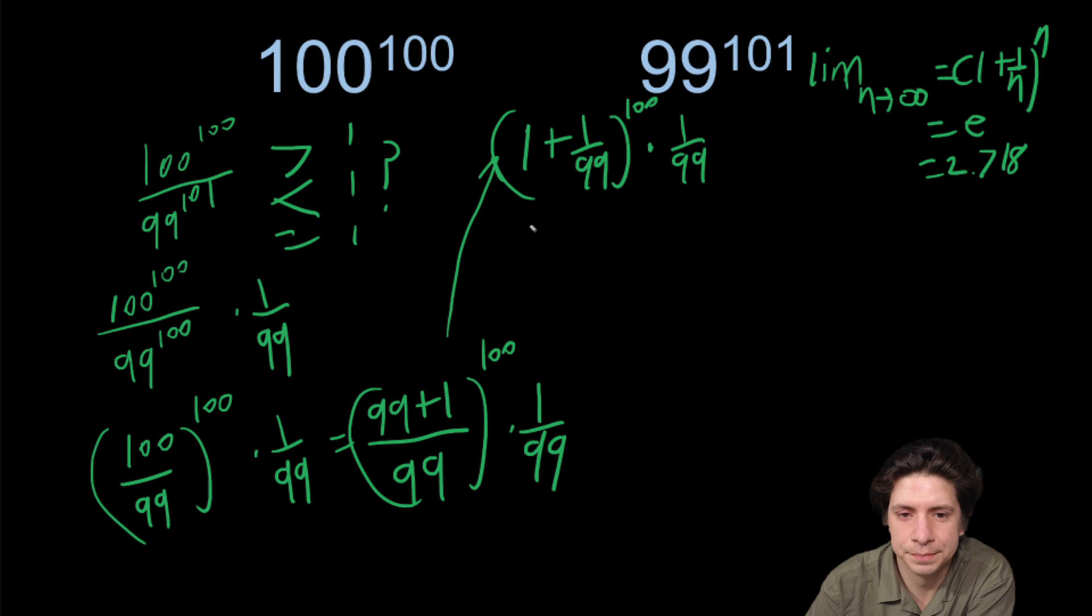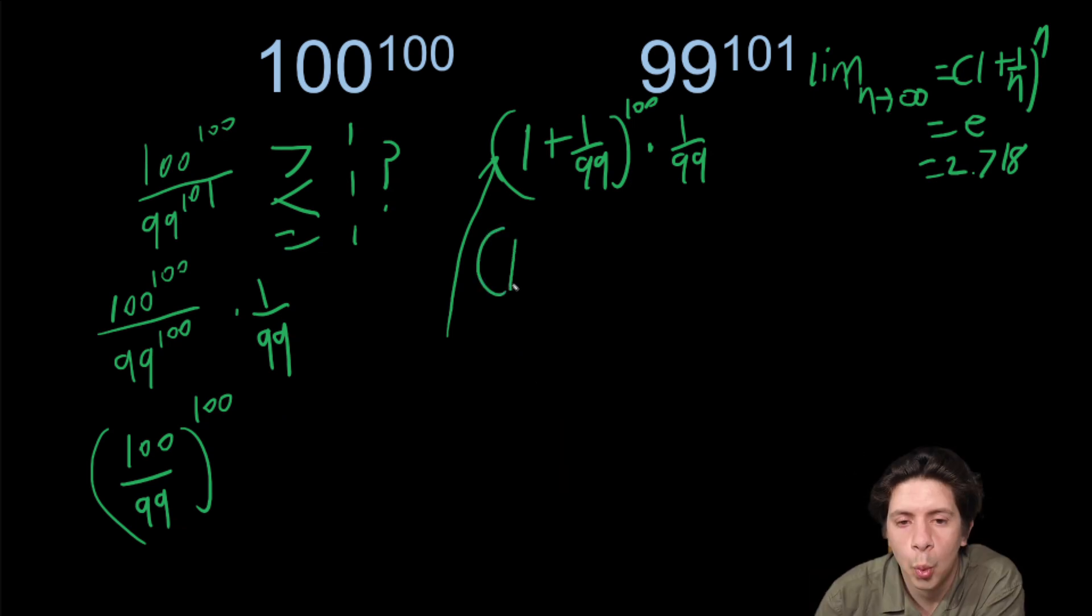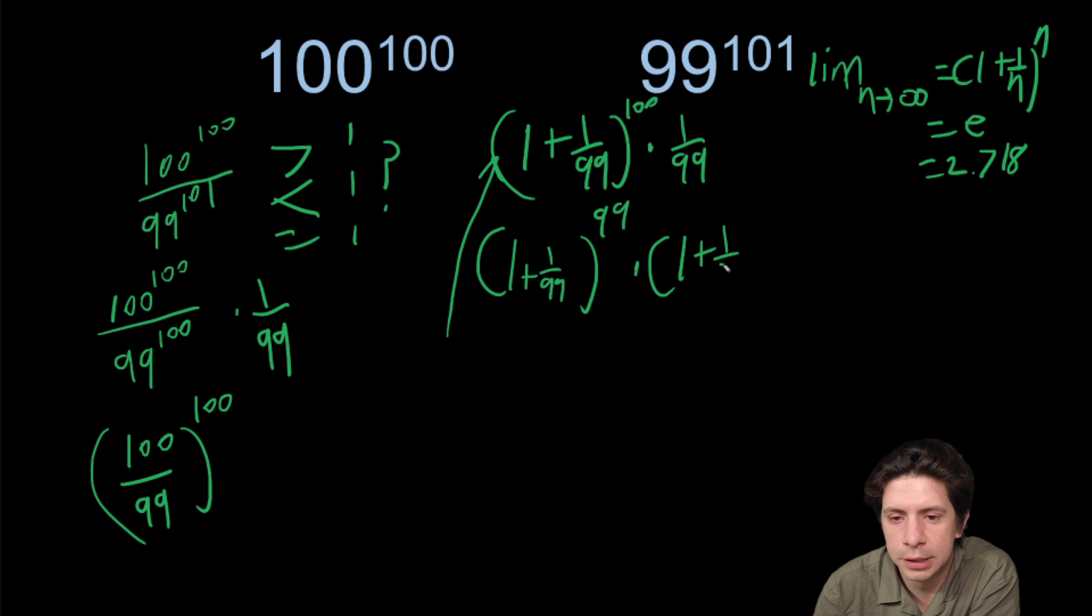So we'll have one plus one over 99 to the 99 times one plus one over 99 times one over 99.